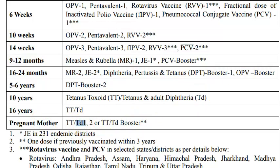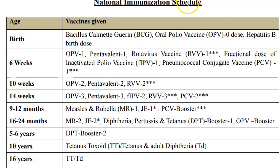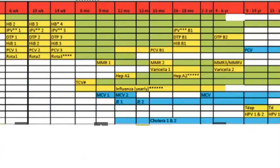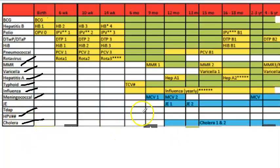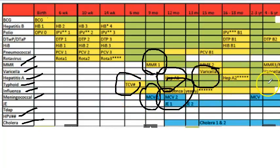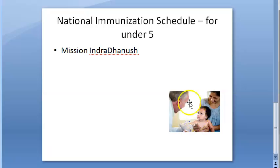The national immunization schedule is different from the Indian Pediatric Association (IPA) schedule. The IPA schedule includes more vaccines: instead of MR they give MMR, and they add varicella (chickenpox), hepatitis A, typhoid, influenza, meningococcal, human papillomavirus (HPV), and cholera vaccines. The IPA schedule is considerably more comprehensive than the national schedule.